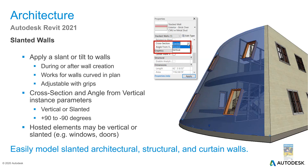They have now introduced slanted walls. If you have to work on a project that requires a slanted wall, you can do so directly — prior to this, you had to create a mass object and use 'wall by face' to place it. Now you can create a slanted or tilted wall and adjust the cross section and angle from vertical parameters during or after creation.